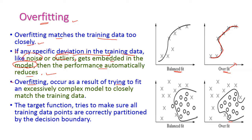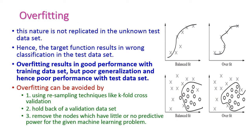Overfitting occurs as a result of trying to fit an excessively complex model that closely matches the training data, because of noise and outliers. The target function tries to make sure all the training data points are correctly partitioned by the decision boundary — this is called overfitting. The test data is not affected by the overfitting, meaning the target function results in wrong classification in the testing data set. The new data is never affected by the overfitting.